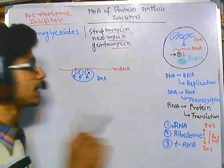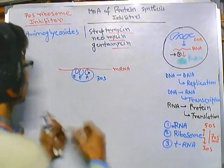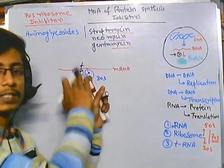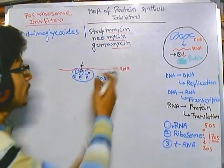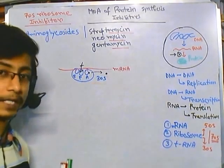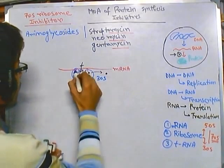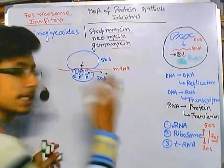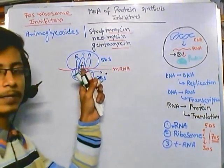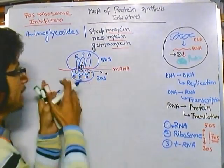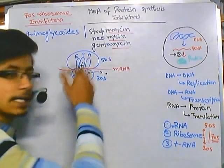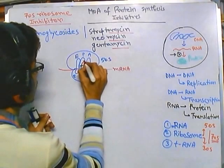The first charged tRNA is placed at the P site, not the A site, because the A site is already blocked by the release factor. Once the first tRNA binds at the P site, the release factor is released. After releasing the release factor, the 50S subunit comes and attaches. The 50S also has E, P, and A sites. Now the first tRNA sits on the P site, E and A sites are free, and another tRNA will come to the A site.